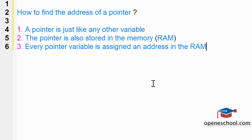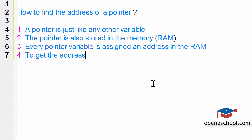So, whichever pointer variable you create, it will be assigned an address in the RAM. After this, you should explain that to access or get the address of any variable in C, we use the ampersand operator.